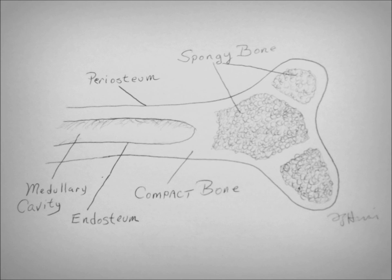Well, that's enough about the internal anatomy of a bone. In the next lesson, we'll go outside and talk about different landmarks on our bones.